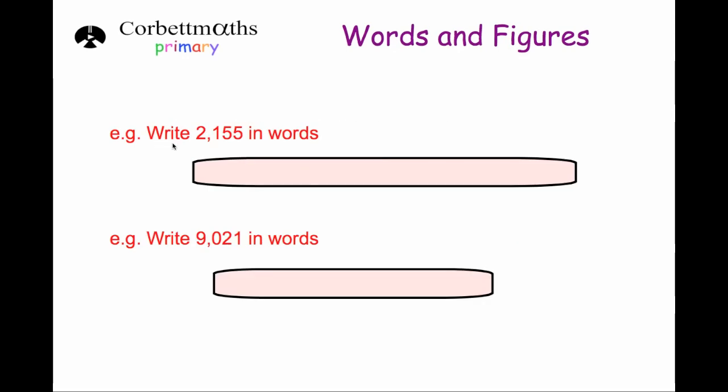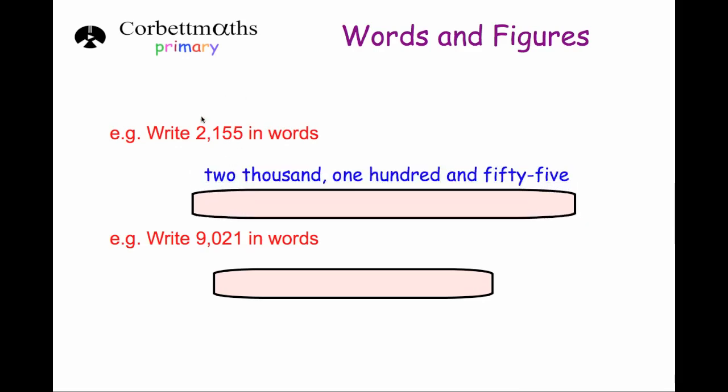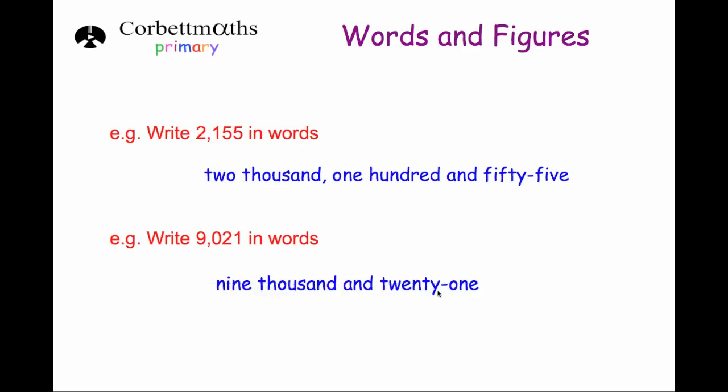We've been asked to write this number in words. So it's got a two in the thousands column. So then it's got one hundred and fifty-five. So the number will be two thousand, one hundred and fifty-five. The next question says to write this number in words. So again it's got a nine in the thousands column. It's got no hundreds, so it'll be just nine thousand. And then it's got twenty-one. So the answer will be nine thousand and twenty-one.